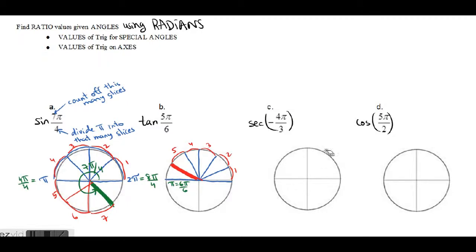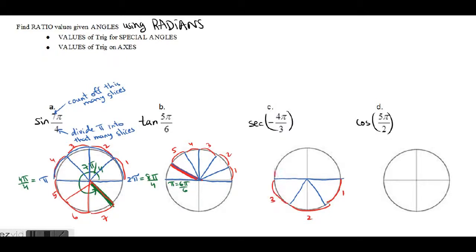The next question has a negative angle. Negative angles rotate clockwise instead of counterclockwise. Here we divide π into three equal sections along the bottom portion since the rotation is negative — each chunk is about 60°. We then count off four sections in the clockwise direction: one, two, three, four — so the final answer lands here.